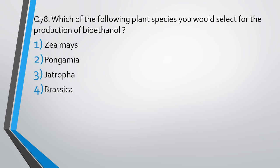Question number 78. Which of the following plant species would you select for production of bioethanol? The correct answer is option 3. Jatropha is used in production of bioethanol.